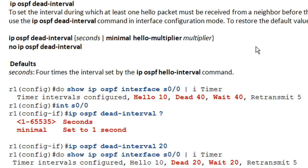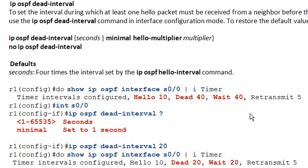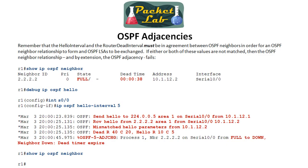You want to make your dead timer a multiple of your hello timer. For example, setting the dead timer to 18 seconds with a hello interval of 10 seconds means you can only miss one hello. It will send a hello, replenish the timer, but if you miss one it drops to 8 seconds, and by the time the next hello arrives you're already past the dead timer and the neighbor relationship goes down. Don't make the dead interval equal to the hello interval — that will cause endless headaches.